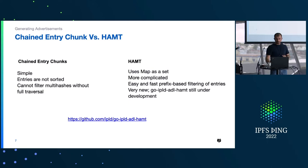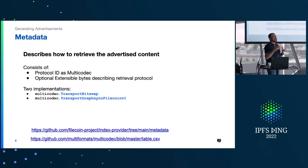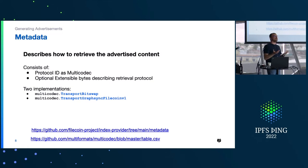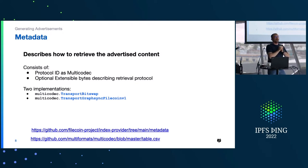I touched on metadata — what is metadata in an advertisement? An index provider tells everybody about the multihashes it stores and also tells them how the content could be retrieved. Metadata is what captures how content can be retrieved. The metadata itself is designed to be extremely extensible. The only structure it has is that it starts with a protocol ID and has an optional byte after the protocol ID, which defines whatever protocol you'd like. Today you could invent your own special way of fetching information and define your own metadata.